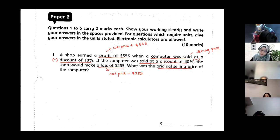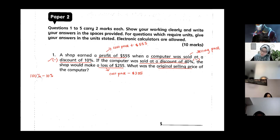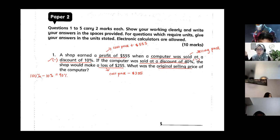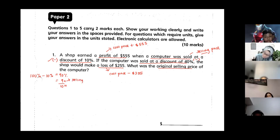We know there's a profit of $555 when sold at a discount of 10%. If it's a discount of 10%, you take 100 and minus 10, which gives you 90. Convert 90 into units and you get 9 over 10 units. This 9 units represents the selling price.